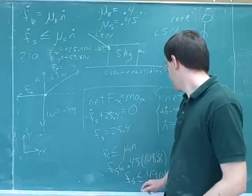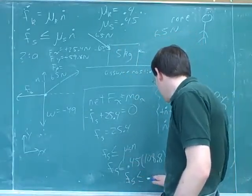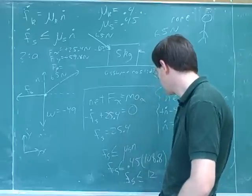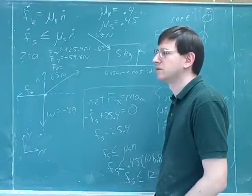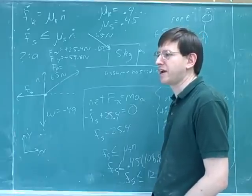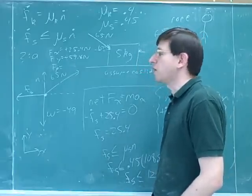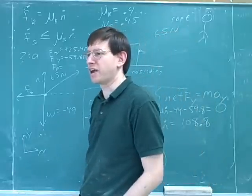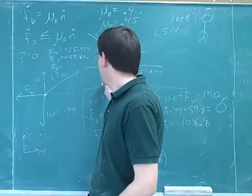Now, what would have happened if this maximum static friction had come out to be, say, 12? Then it would be moving, and it would be accelerating because we'd be pushing more than the kinetic friction. So now we would... And then how would you figure out the acceleration? We would do the whole problem all over again. That's right. Except now, under the assumption that it is sliding, what would change then?